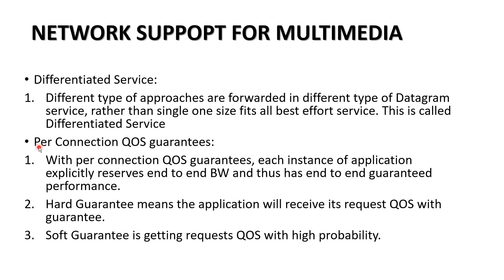Talking about per-connection QoS guarantees: with per-connection QoS guarantees, each instance of an application explicitly reserves end-to-end bandwidth. For example, if we need to forward VoIP data from one end to another, we have to reserve the links between both end users. This is done in two ways — a hard guarantee, where the link will not be broken during the entire call, and a soft guarantee, where there is only a probability of getting a full guarantee.